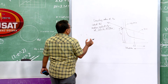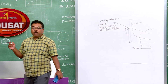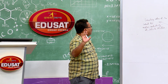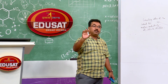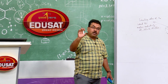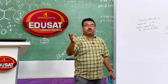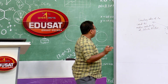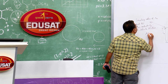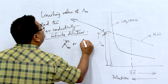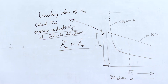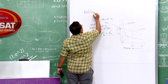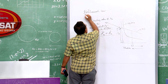This leads to a new law — Kohlrausch's law, also called the law of independent migration of ions. This law enables us to calculate the limiting molar conductivity at infinite dilution for weak electrolytes as well.